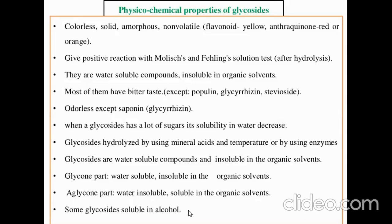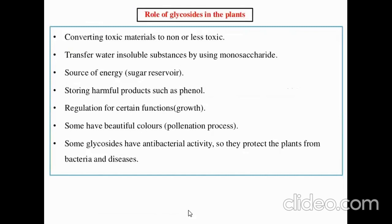The role of glycosides in plants includes: converting toxic materials to non-toxic or less toxic forms; transferring water-insoluble substances using monosaccharides; serving as a source of energy like sugar reservoirs; storing harmful products such as phenols; regulating certain functions like plant growth. Some have beautiful colors that attract insects for pollination, and some glycosides have antibacterial activity protecting the plant from disease.